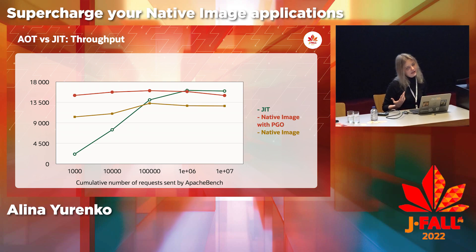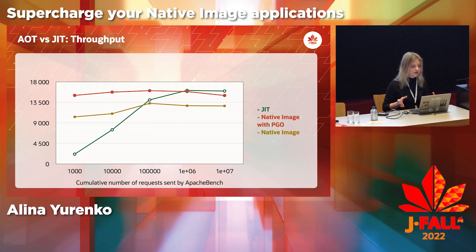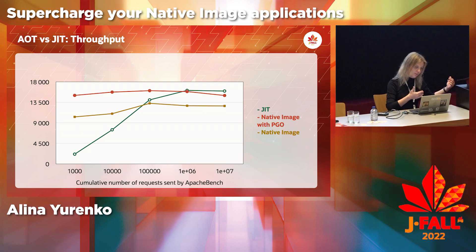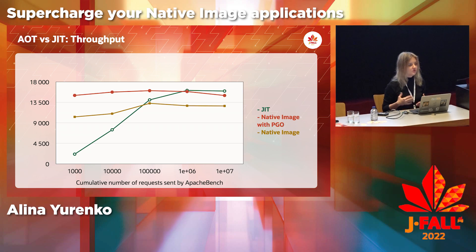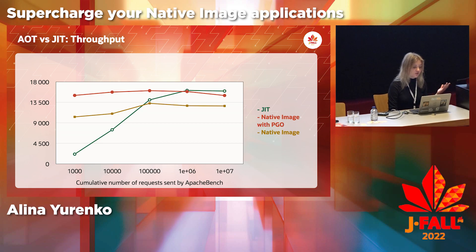There is one more thing to do with native image performance, and that is profile-guided optimizations. When running on a JVM, the way it optimizes so well at runtime is it collects profile information — observing which methods are often called, which types are used — and executing code dynamically is how the JVM optimizes for peak throughput. The way to approach this for native image is to run your application in instrumented mode, apply relevant workloads to collect profile information, and give us those profiles at image build time so we can build the application with those profiles in mind and optimize for peak throughput.